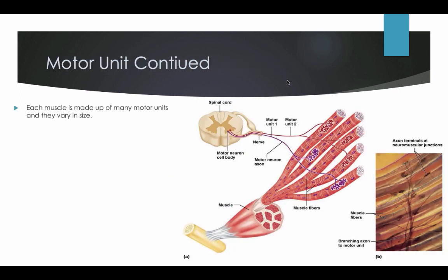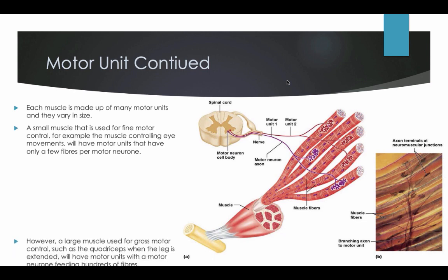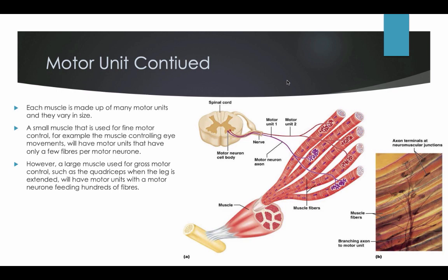Each muscle is made up of many motor units and they vary in size. A small muscle used for fine motor control — for example, the muscle controlling eye movement — will have motor units with only a few fibres per motor neuron. However, a large muscle used for gross motor control, such as the quadriceps when the leg is extended, will have motor units with a motor neuron feeding hundreds of fibres. The electrical impulse comes from the motor neuron, travels down the nerves to the motor units, and then to the muscle fibres, causing contraction.